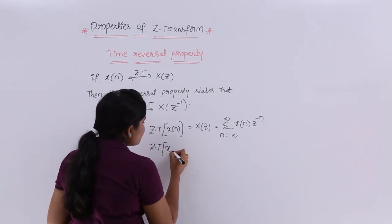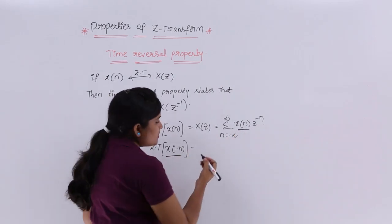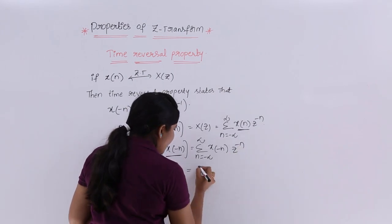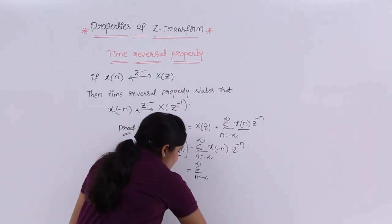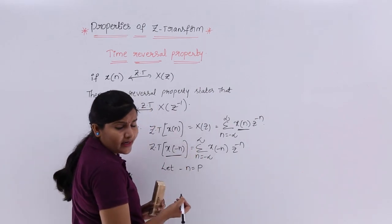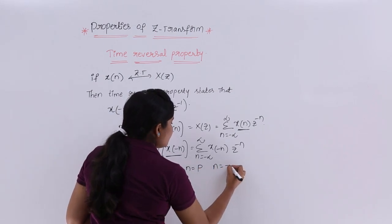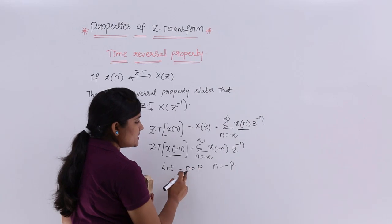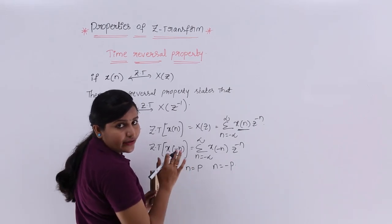Considering X(-n) as my signal, I need to replace the signal in the equation. The equation changes to: summation from n = -∞ to ∞ of X(-n)·Z^(-n). Now I apply a substitution: let -n = P, so n = -P. When n = -∞, P = ∞, and when n = ∞, P = -∞ — the limits also change.